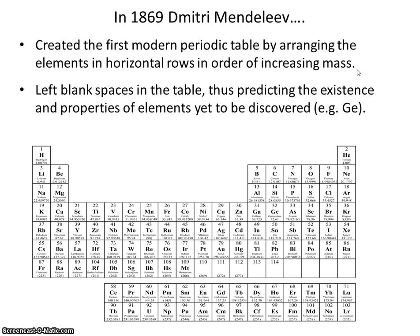Amazingly, he also left spaces in the table predicting the existence and the properties of elements yet to be discovered. For example, germanium hadn't been discovered yet, but he left a space right here in the periodic table, predicting that one day an element would be discovered whose mass and properties would place it right there in that spot.